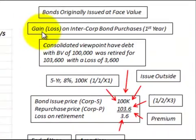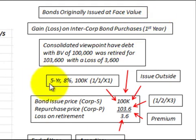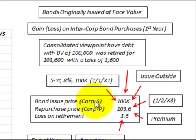Here we're going to be looking at how we'd handle a gain or loss on an intercorporate bond purchase for consolidation purposes. Our example is where a bond is originally issued at its face value. We have a five-year bond, 8%, $100,000, issued on 11X1 by the subsidiary Corporation S for $100,000, and that was issued to an outside party.